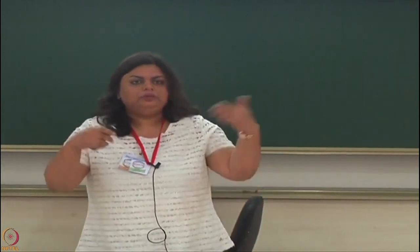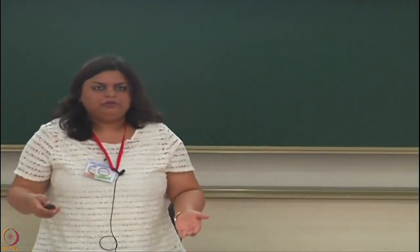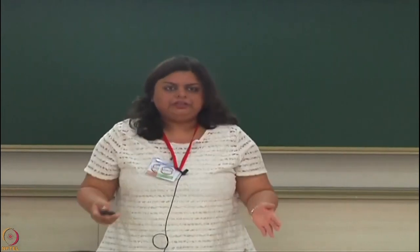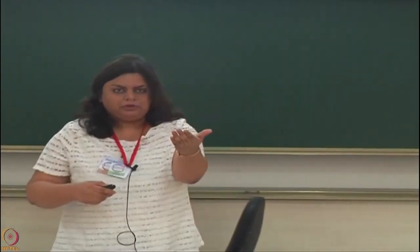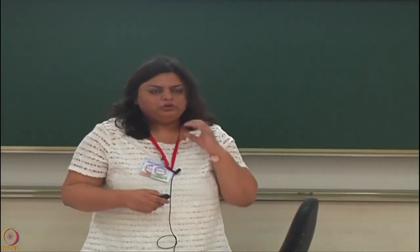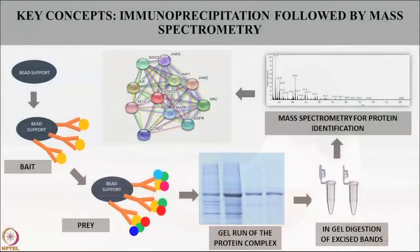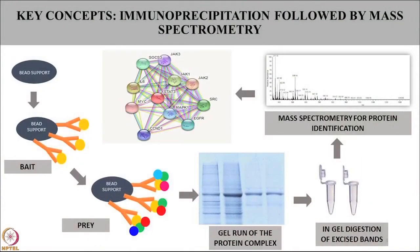Rather than doing global proteomics where you identify everything, here you have enriched your sample to look at a particular complex — just as you can enrich for PTMs. An alternate way is to use a high-pH buffer like glycine buffer, which will disrupt the bead-antibody interaction and allow in-solution digestion, which you can then subject to mass spectrometry analysis. Overall this is the simple workflow of IPMS.